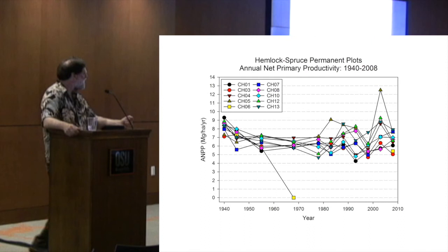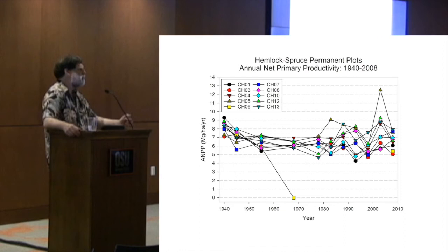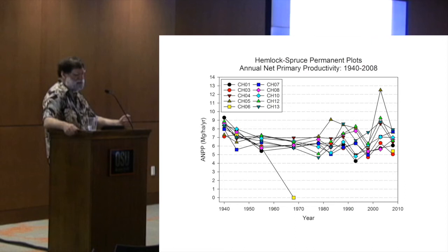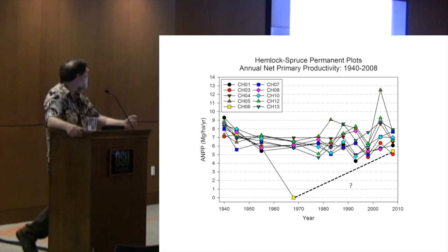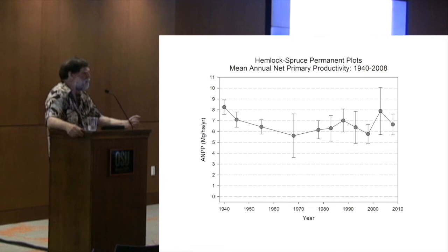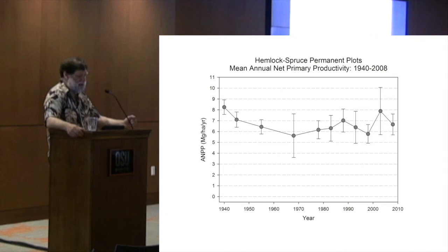Now let me show you the other side — the input — which is net primary production of the bole. We can see that although it's varied, and plot six went very low after disturbance, it's been remarkably constant in contrast to mortality up until the 80s and maybe 90s. We were very interested in what seemed to be a decline in production, but we can see it's either stabilized or maybe even gone up as the stand has become disturbed. There's a curiosity about why plot five had such high productivity in one period.